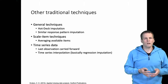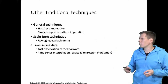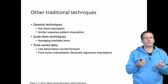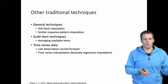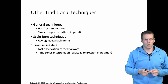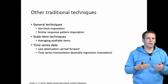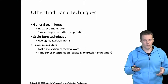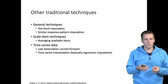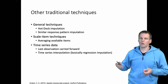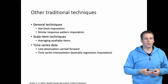There are other traditional techniques, though not very commonly used. Hot deck imputation and similar response pattern imputation are based on finding cases similar to the one with missing data and taking values from those similar cases to impute in place of the missing data. These have the same kinds of problems as regression-based imputation. At the scale item level, averaging available items is an option — if you have a scale with three items and one is missing, you can use the average of the other two. This is sometimes useful, though it often gets applied without being explicitly reported.